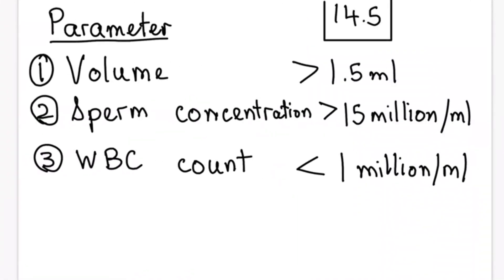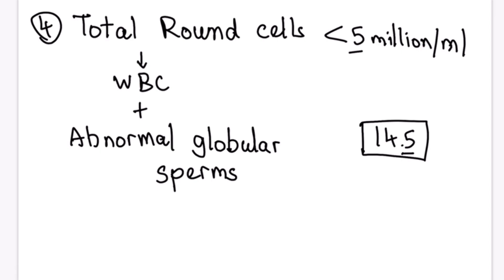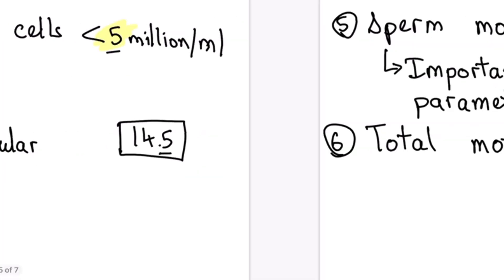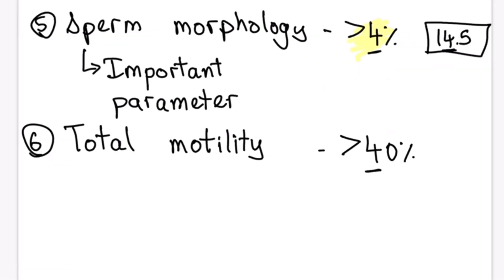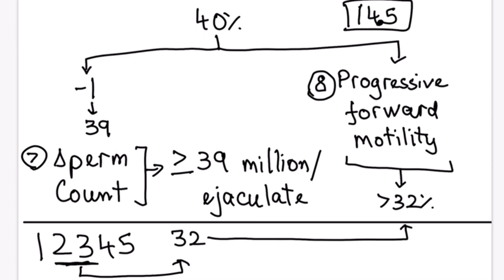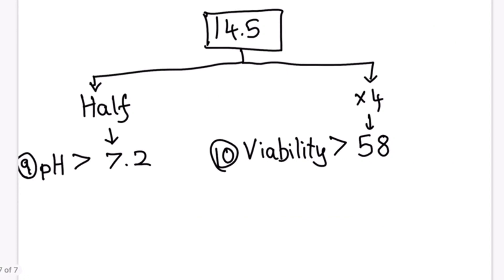To summarize all 10 parameters using 14.5: Volume >1.5 ml; sperm concentration >15 million/ml; WBC count <1 million/ml; total round cells (WBC + abnormal sperms) <5 million/ml; sperm morphology >4%; total motility >40%; sperm count ≥39 million/ejaculate (40 minus 1); progressive forward motility >32% (inverted missing digits 2,3); pH >7.2 (14.5 ÷ 2); and viability >58% (14.5 × 4).